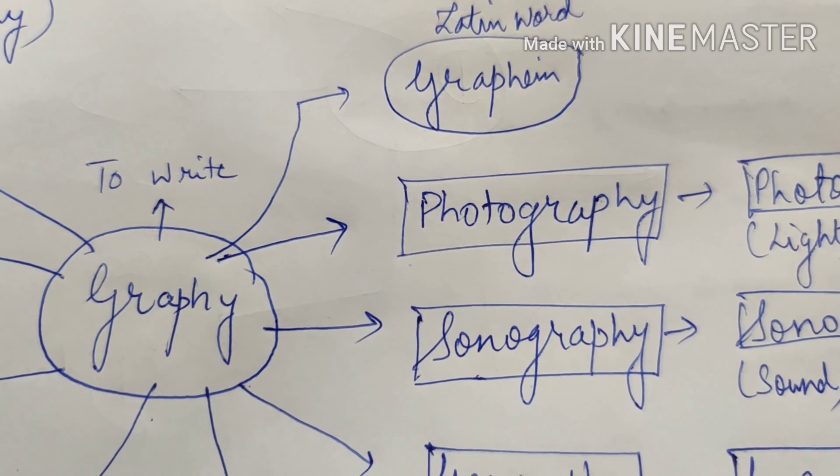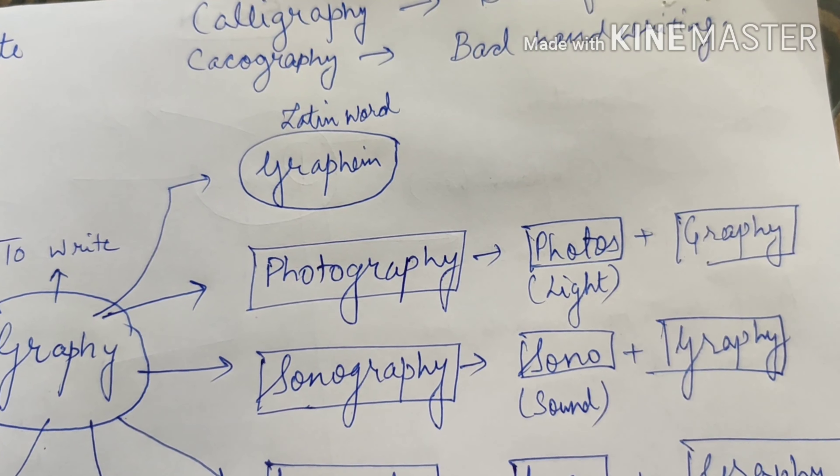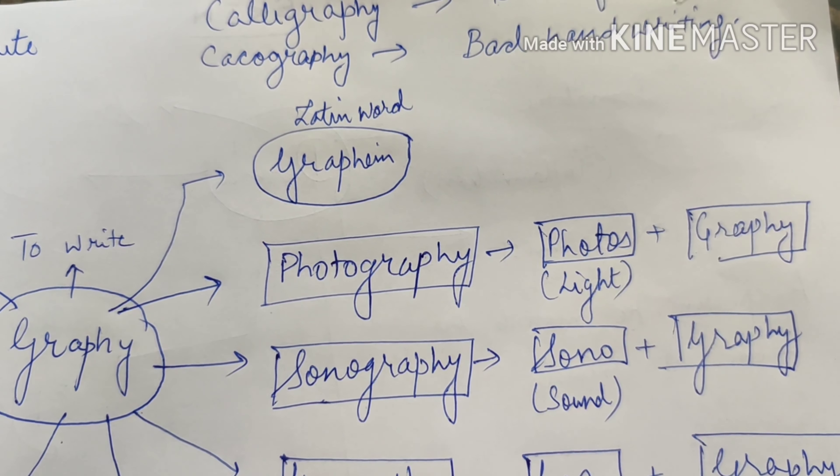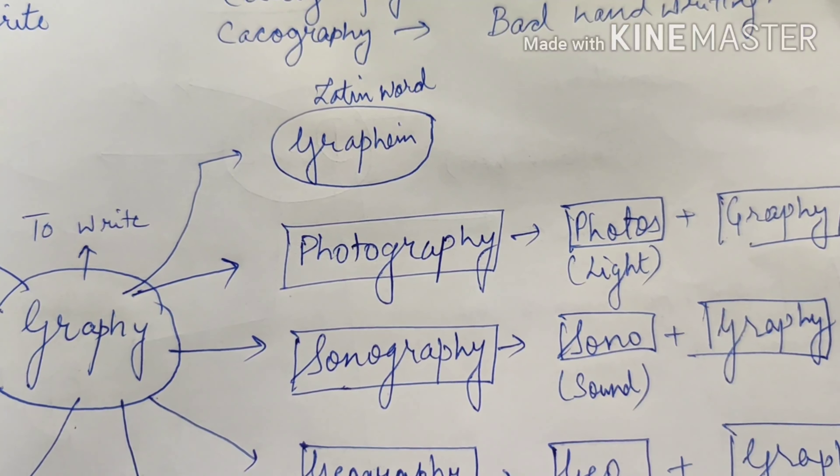Photography is the first word we are covering out of graphi. Photography comes from photos and graphi. Photos means light and graphi means to write. So when you write with the form of light it's called a photograph. And the process is referred as photography.